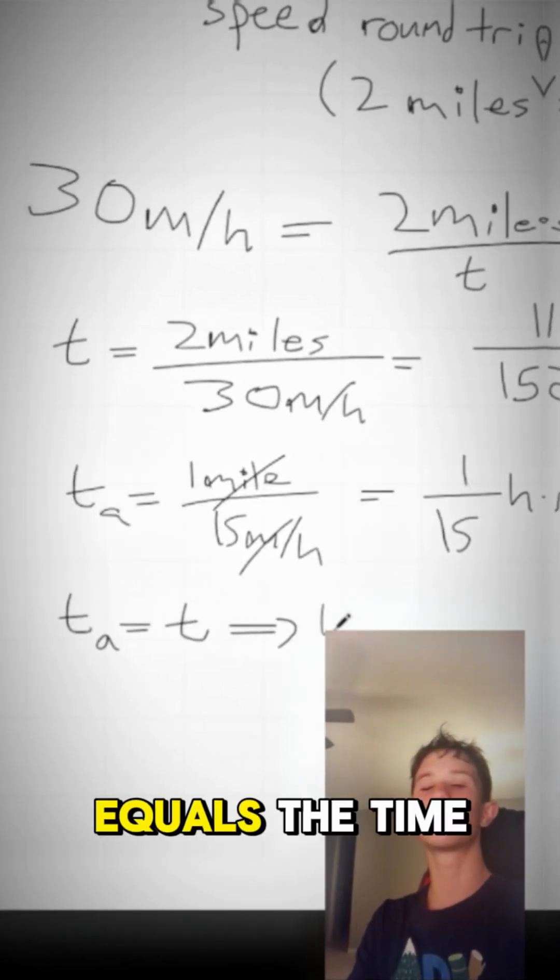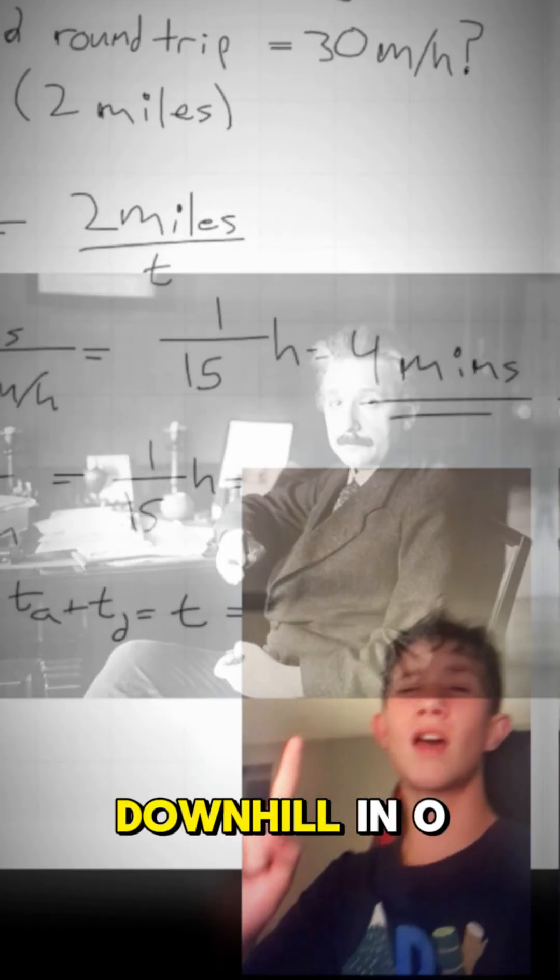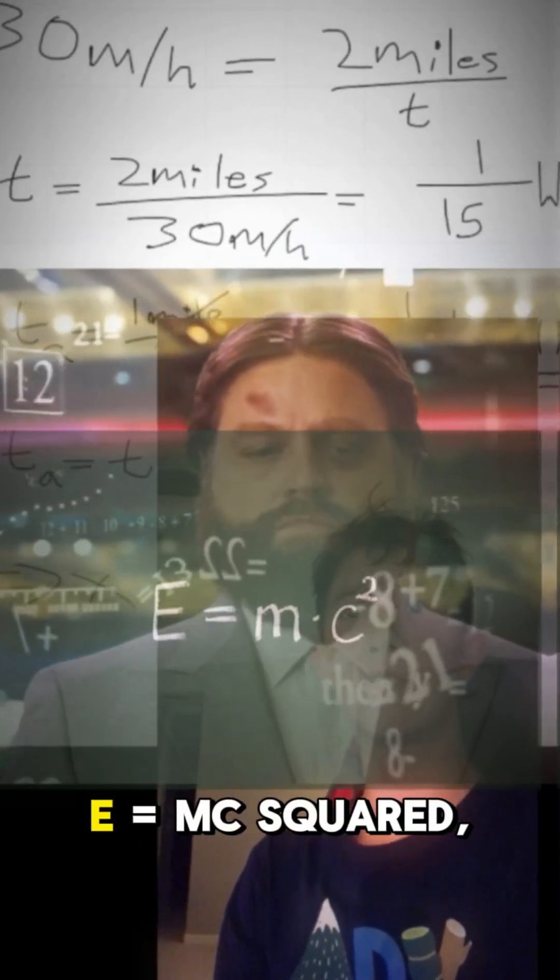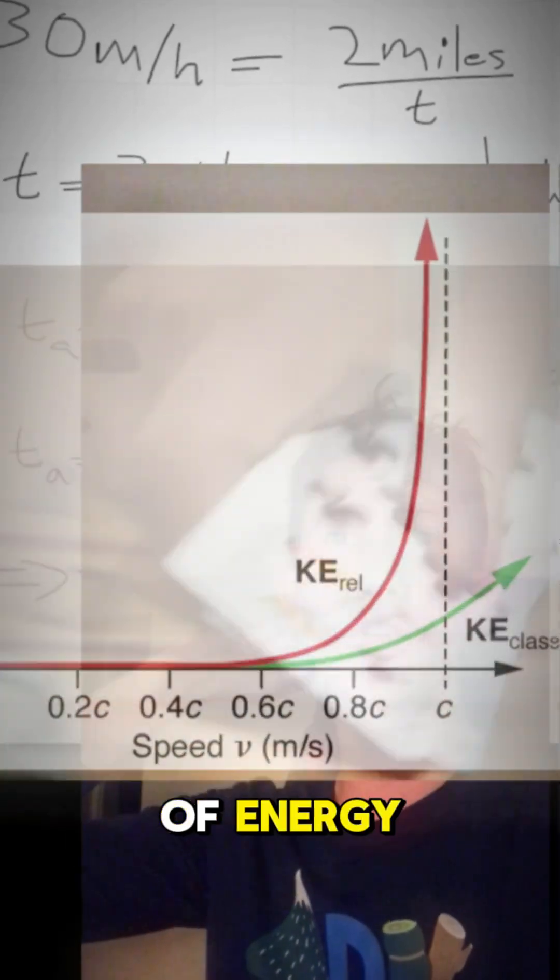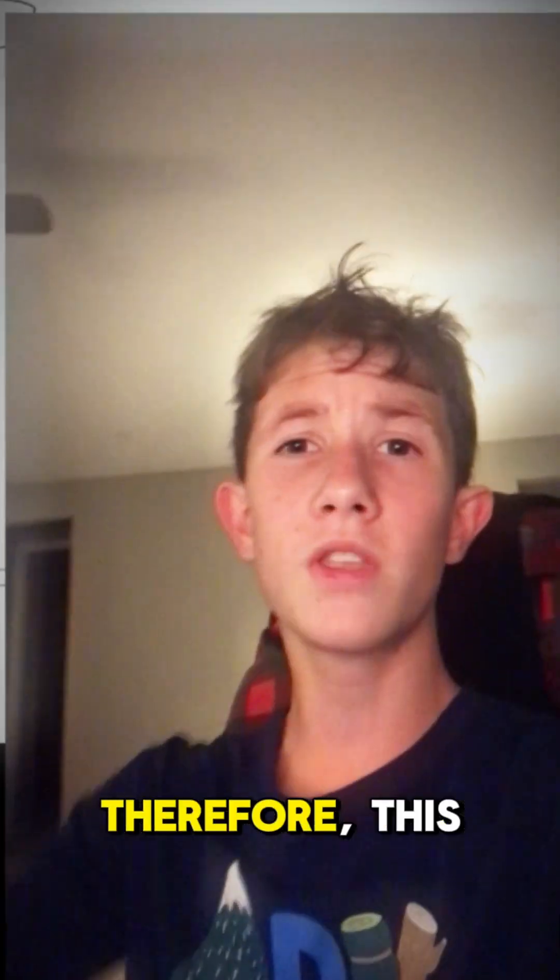In case you haven't noticed, our time in the ascent equals the time in the round trip, which means we would have to go 1 mile downhill in 0 minutes. And as proven by E equals MC squared, you need an impossibly infinite amount of energy in order to move instantaneously. Therefore, this riddle is impossible.